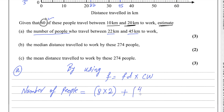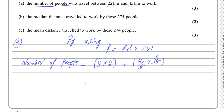So 4/5 multiplied by the class width of 15 — the 5 cancels, giving 4 multiplied by 3 which is 12. Then 12 plus 16 gives you 28. So 28 people are there. This is the answer for the first part.